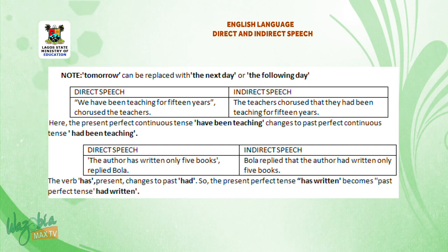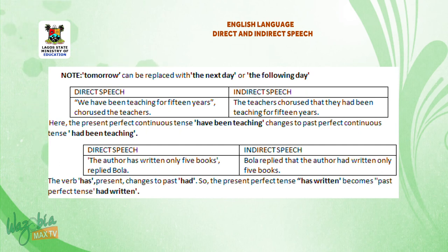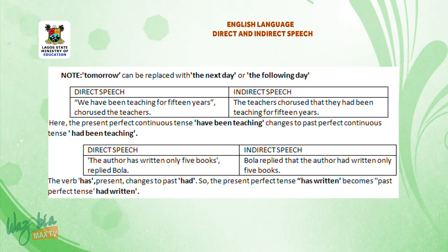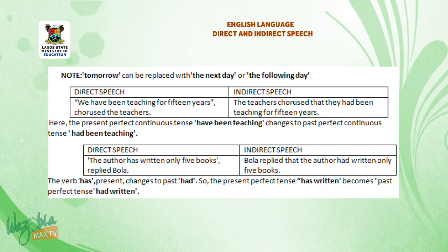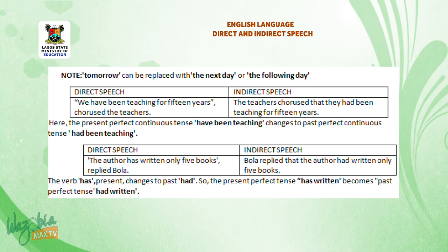'We have been teaching for 15 years,' chorused the teachers. — The teachers chorused that they had been teaching for 15 years. Here, the present perfect continuous tense 'have been teaching' changes to past perfect continuous tense 'had been teaching'. 'The author has written only five books,' replied Bola. — Bola replied that the author had written only five books. The present perfect tense 'has written' becomes past perfect tense 'had written'.